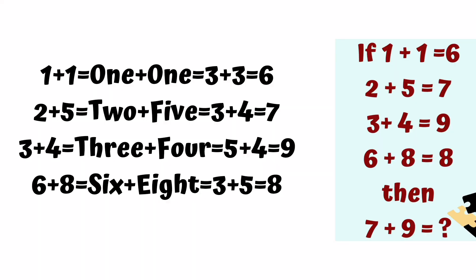you need to think about this. So now, first row: 1 plus 1, so 3 plus 3 value is 6. Similarly row 2, TWO is 3 letters, FIVE is 4, 3 plus 4 equals 7. Row 3: 5 plus 4 is 9.